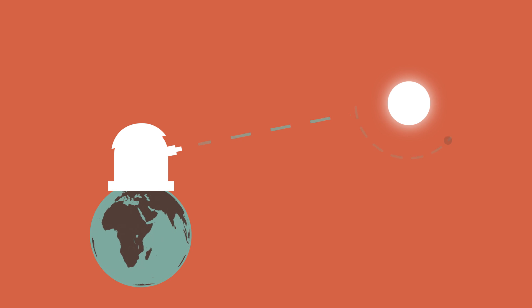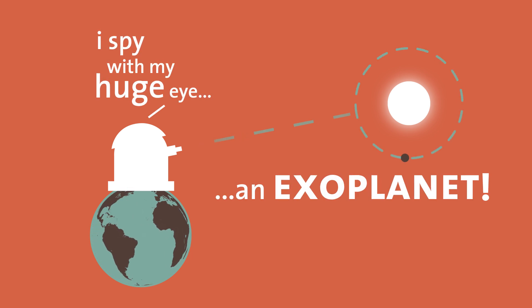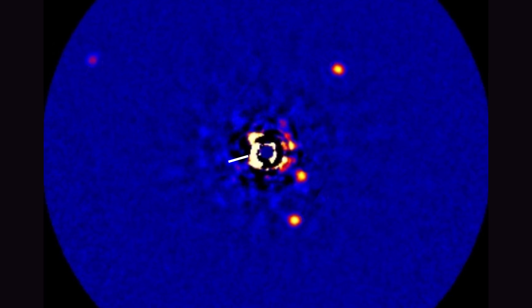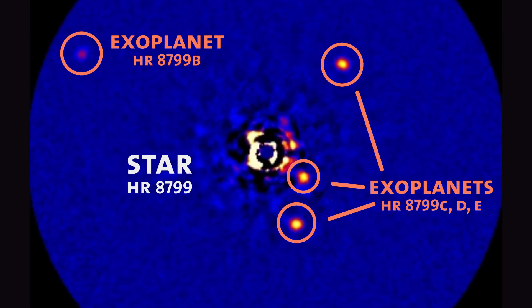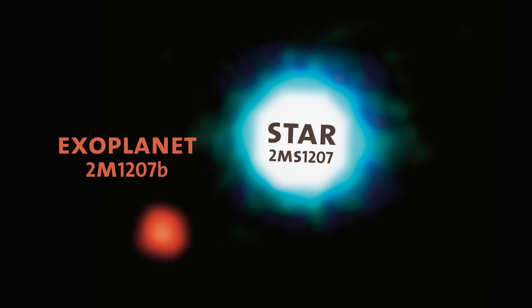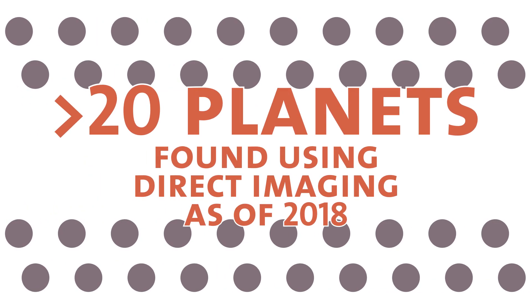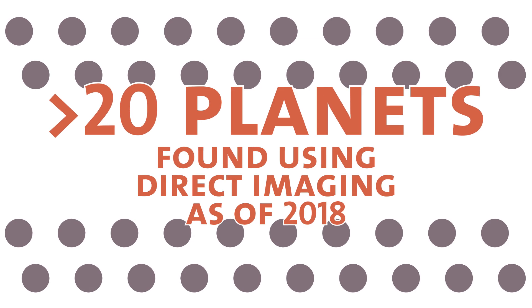In today's world, we're searching for planets around other stars — objects that we call exoplanets. This direct imaging method is actually something that we try as well, just with far more complicated instrumentation. We haven't found that many planets that way, but there are other methods that astronomers use as well.